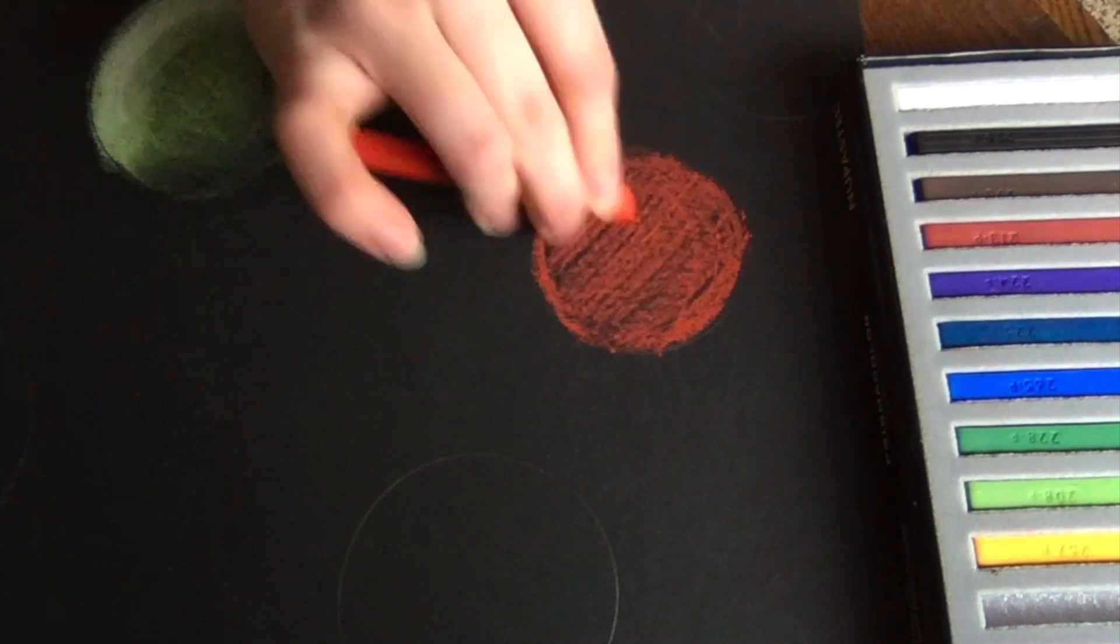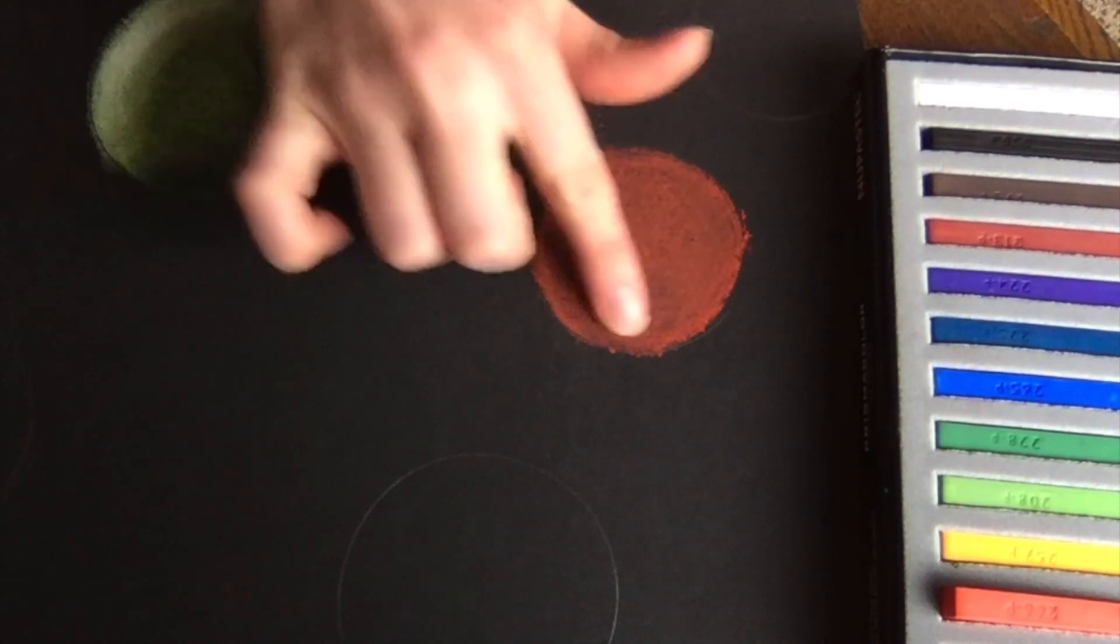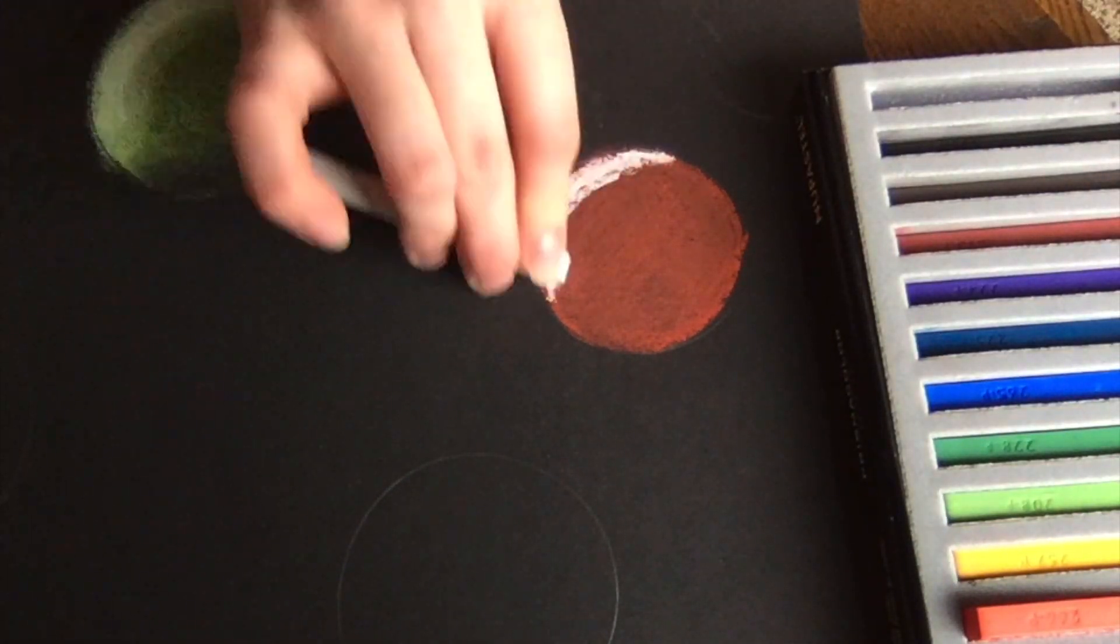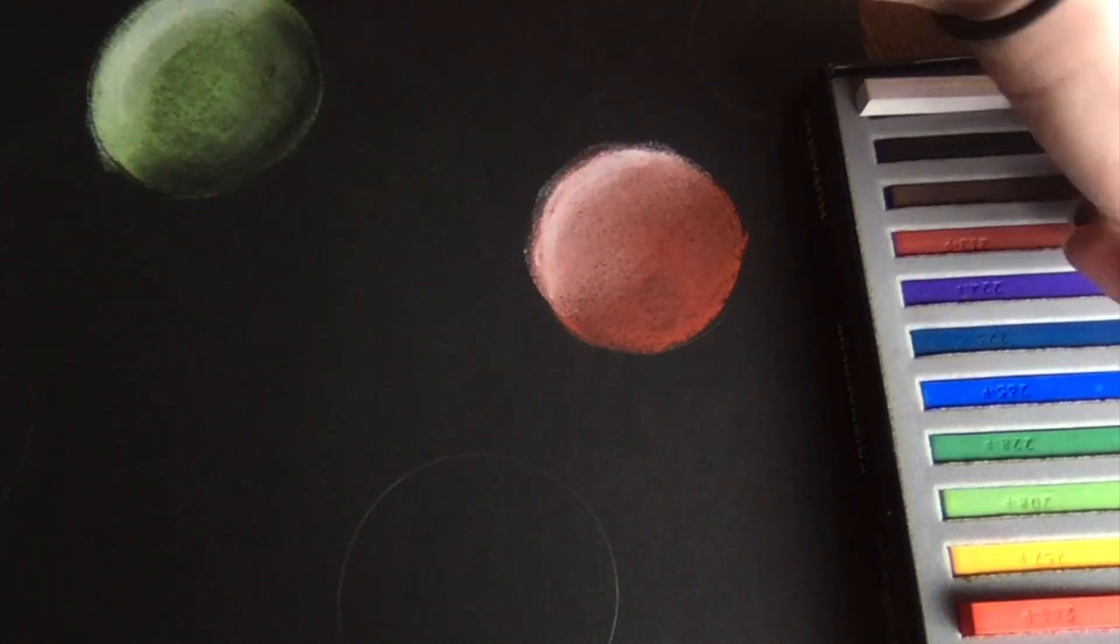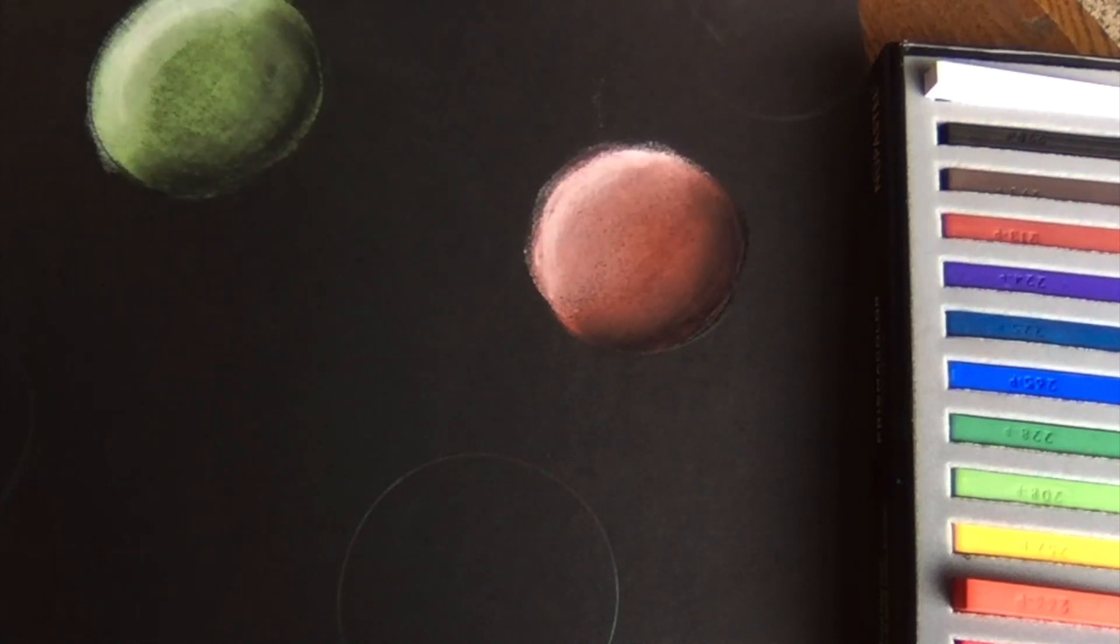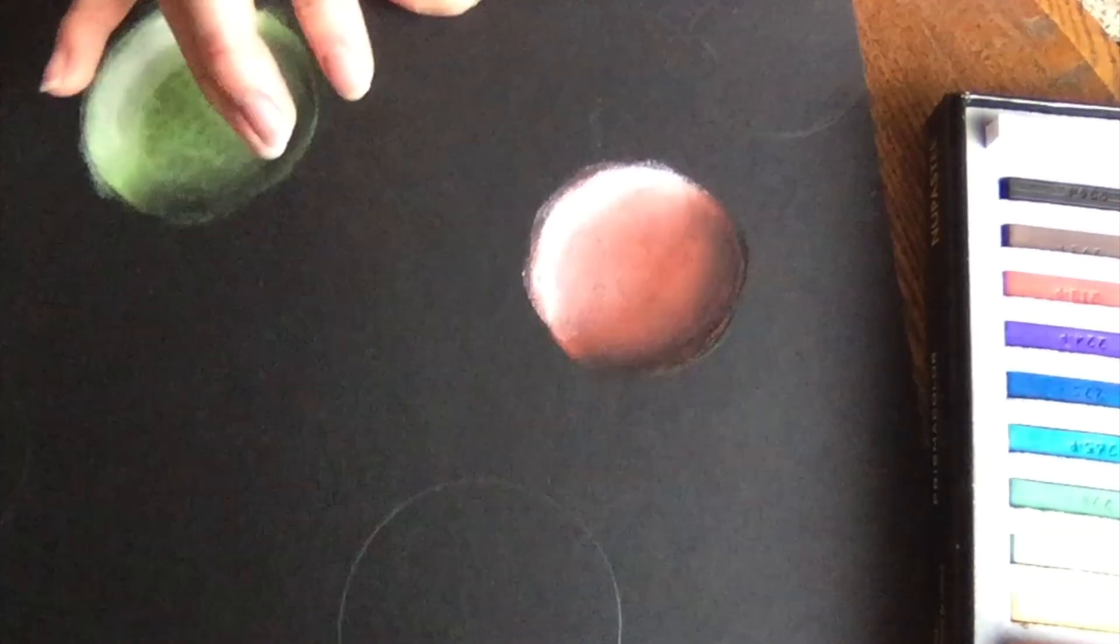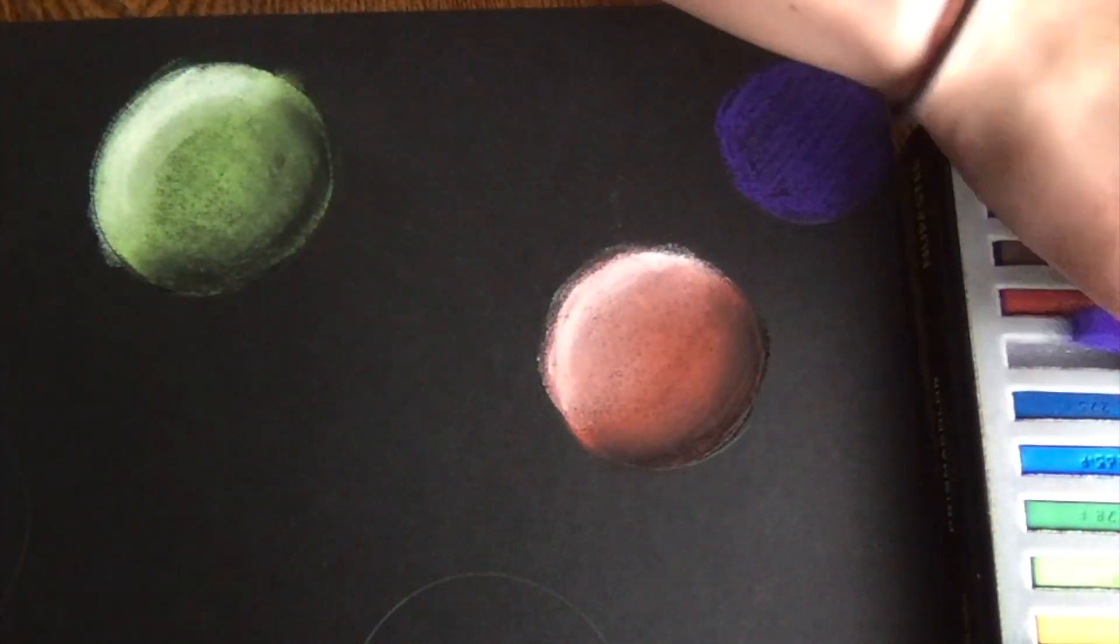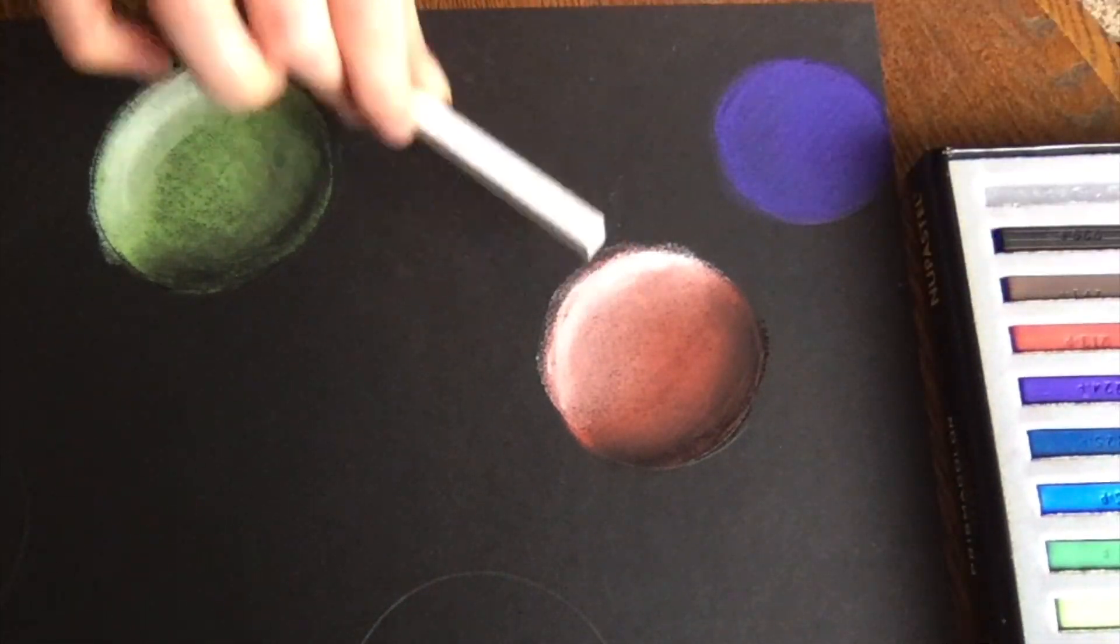So I'm going to go ahead and do the same thing to all my other planets. So showing you real quick here, one color, that's your midtone, blend it with your finger. My light is coming from the same direction on all my planets. So since my first highlight was on the top left, all my other highlights are going to be on the top left. That'll make it look like they're all getting light from the same source. And if my highlights on the top left, that means my shadow is opposite, bottom right. So I'll color a tiny bit of black and blend that in. And you'll just keep doing this technique for all of your planets.